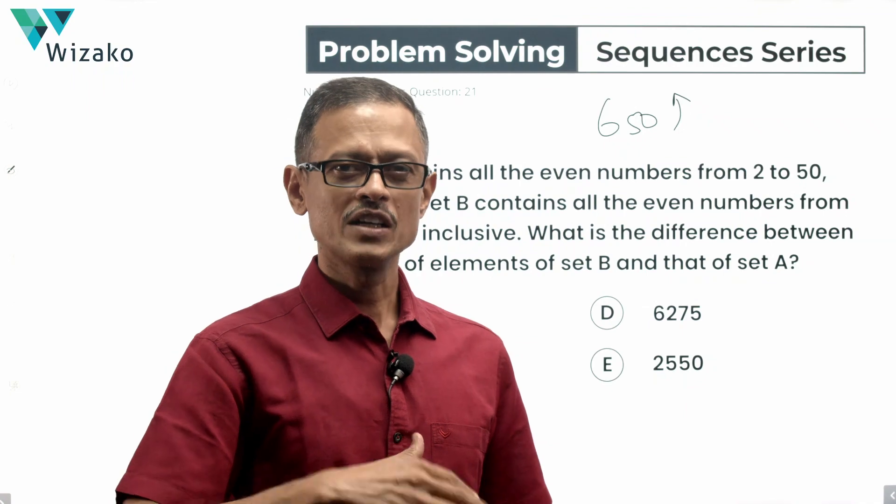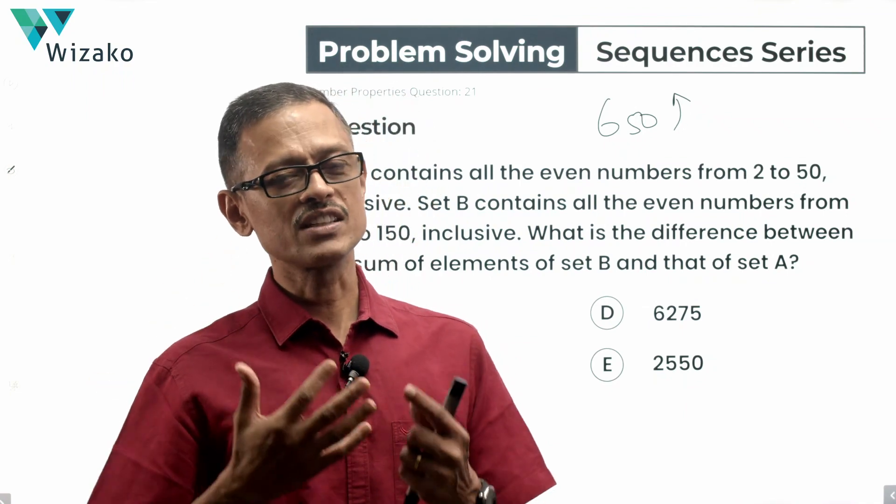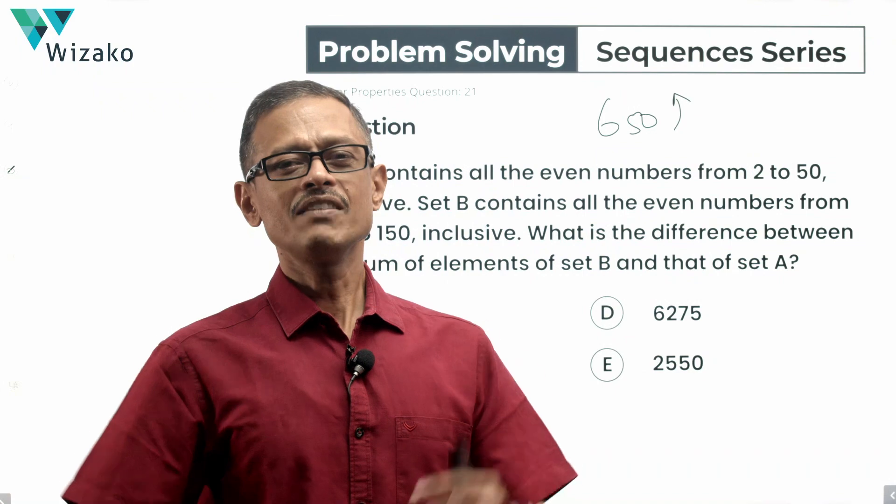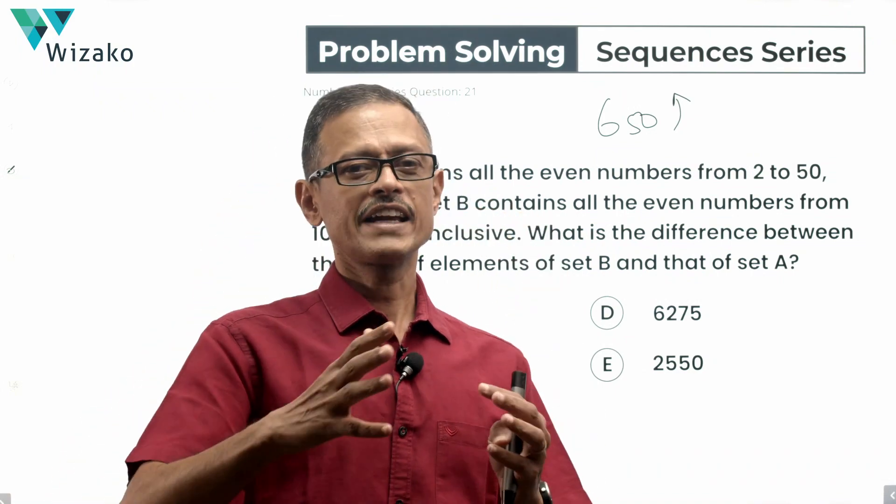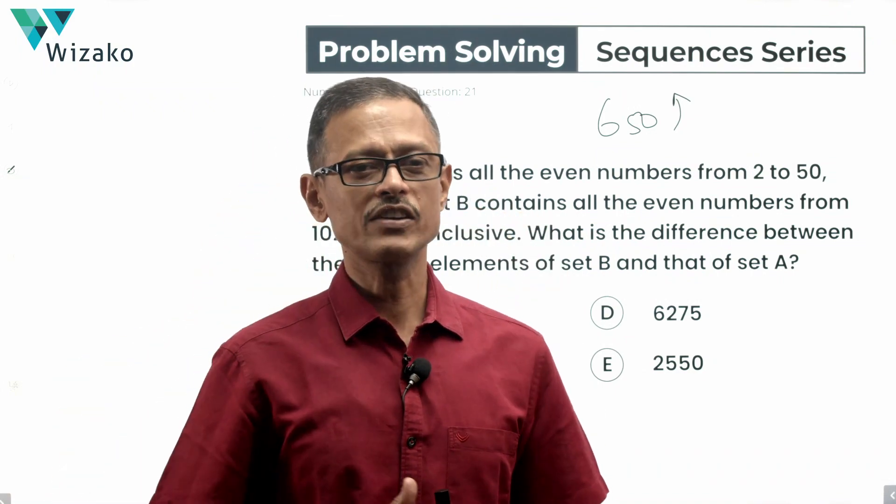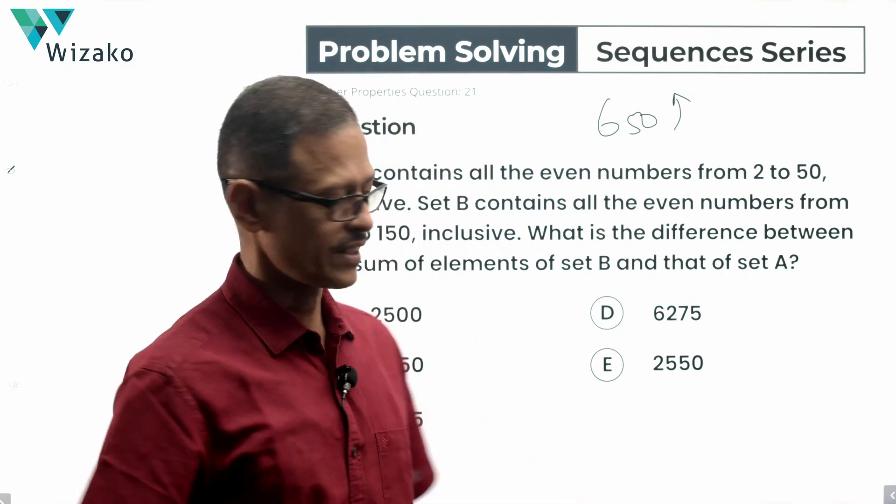We are going to solve it two ways. We will start with the first approach which will probably make it appear as a 550 level question if we are able to visualize it that way, and we will also do the typical way of finding out using the summation of an arithmetic progression formula. We are going to solve this question using two methods.